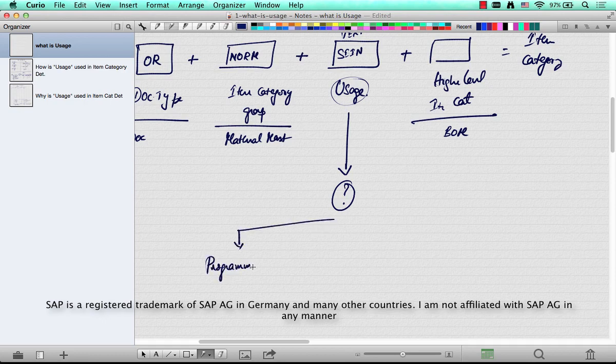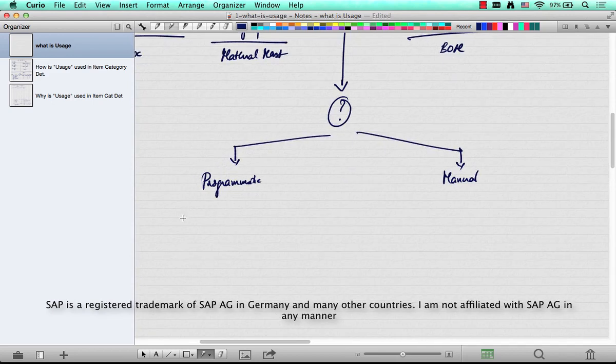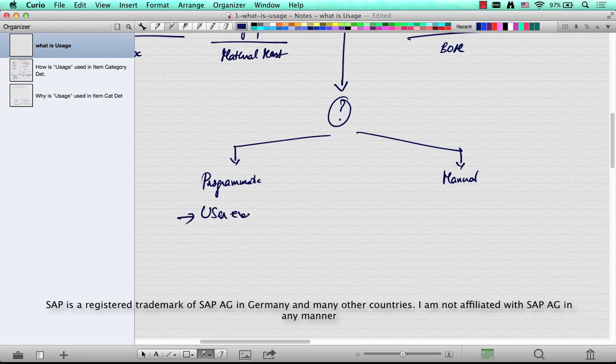Programmatically, you can use a user exit to populate usage, or you can have upstream processes populate the usage. Examples are service orders or RRB, or any of the upstream processes to sales order.